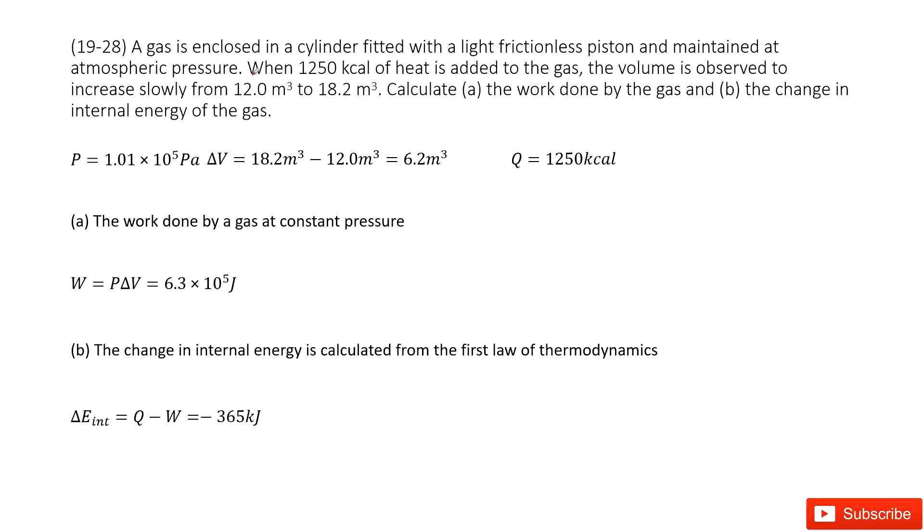If we input the heat Q, 1250 kcal into this gas, and the volume increases slowly from 12 to 18.2, we can find delta V and Q. The first question asks for the work done by the gas.